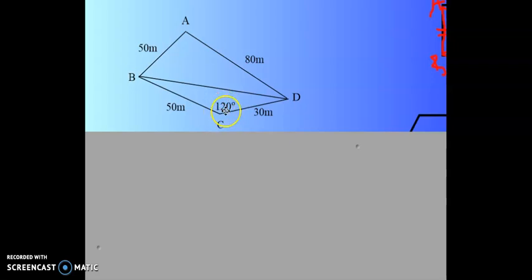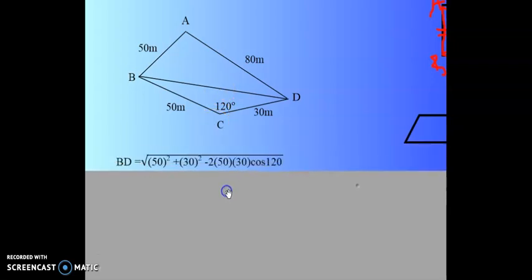Cos rule says this side squared plus this side squared minus 2 of that times that times the cos of this inclusive angle will give me the square on that side. So the answer BD is equal to the square root of 50 squared plus 30 squared minus 2 into 50 into 30 cos of 120 degrees. Answer, 70 meters.